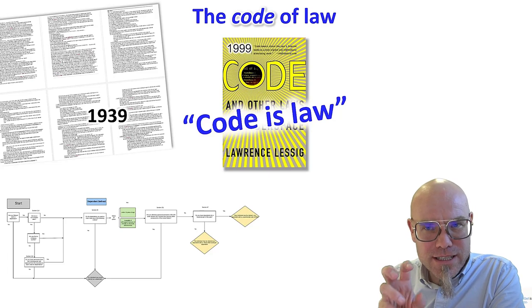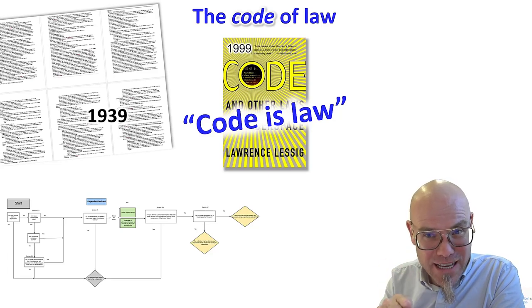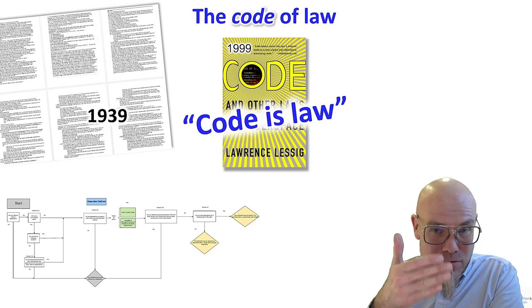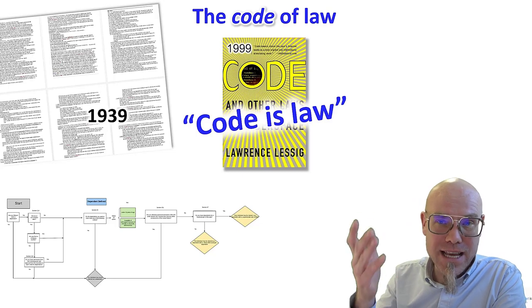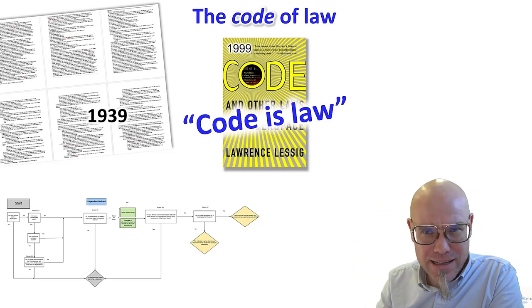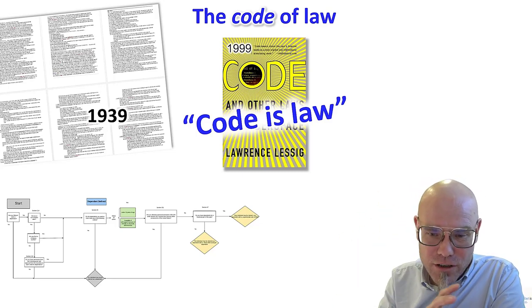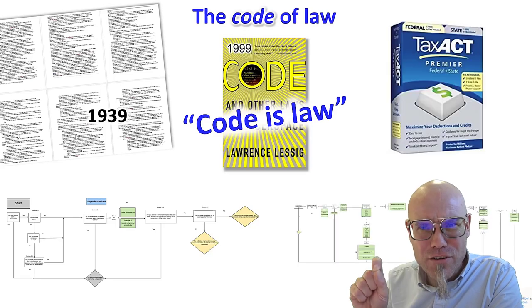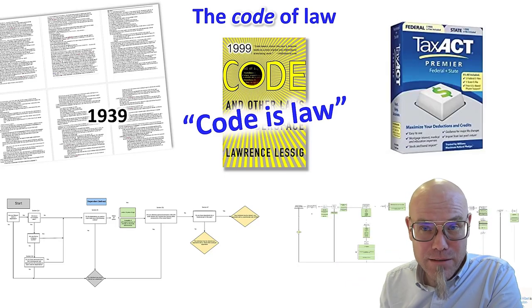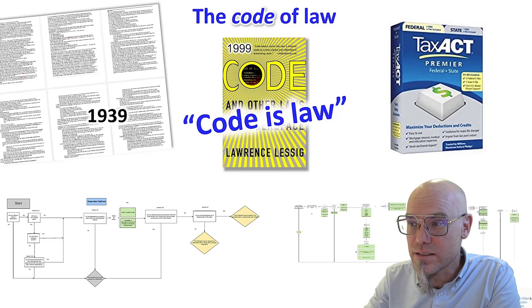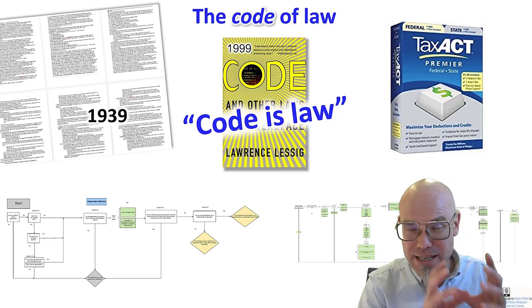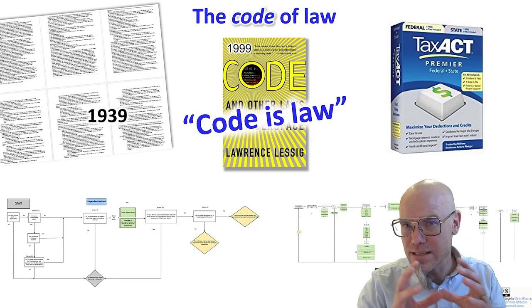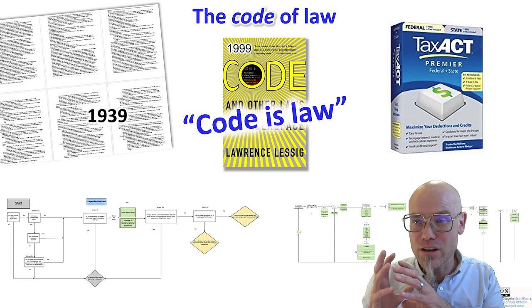What we do there is basically algorithmize these kinds of processes. Here I have the tax process of declaring a dependent. We looked at some tax software — TurboTax and Tax Act — and examined how the software implements the same process. The process is actually quite similar, though a little different, and you can see how when you algorithmize analog processes, how they change once they're in digital format.